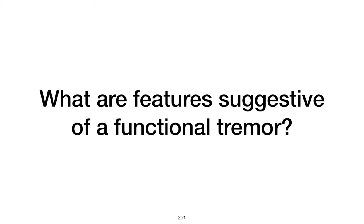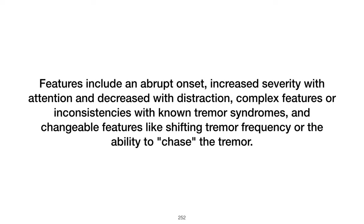What are features suggestive of functional tremor? Features of functional tremor include abrupt onset and a static course that results in functional disability disproportionate to the tremor magnitude, increased severity with attention and decreased with distraction, complex features or clinical inconsistencies, and changeable features such as shifting tremor frequency or the ability to chase the tremor to different locations.